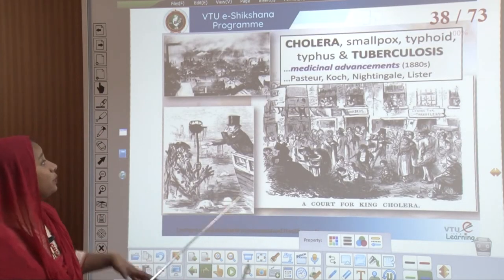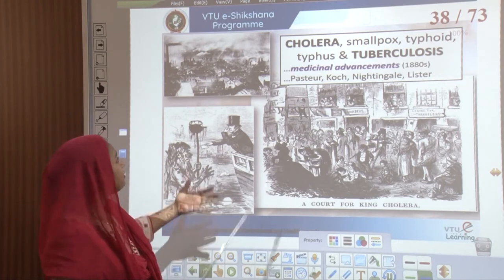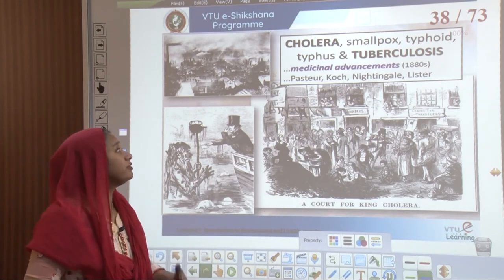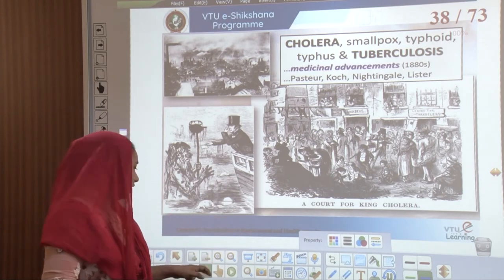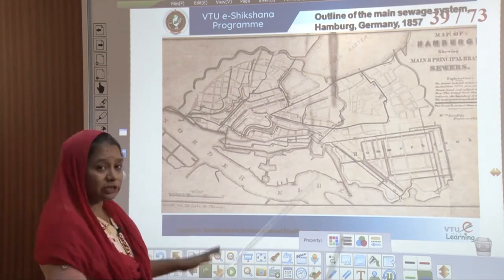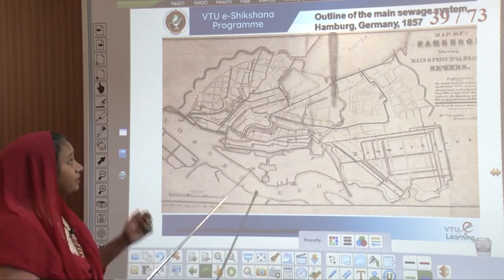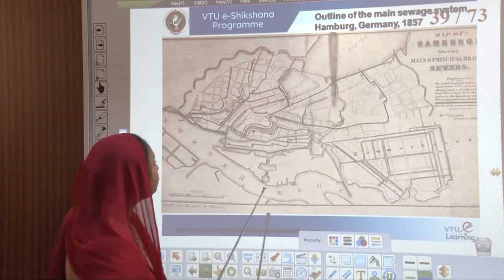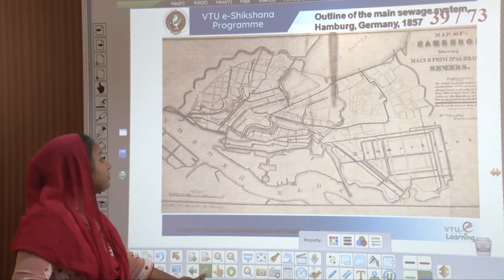A lot of medicinal advancements came about because of epidemic diseases like cholera, tuberculosis, smallpox, typhoid and typhus, which came in because of unhygienic conditions. In Germany, one of the main sewerage systems was planned in Hamburg, where the whole principles of sewers were considered to understand a city and its exit system.